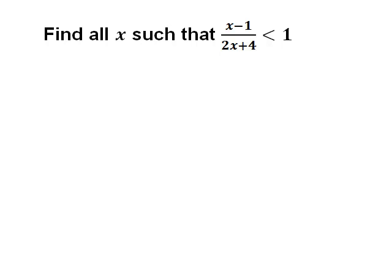Why shouldn't you simply multiply both sides by 2x plus 4? Well, in an inequality, if we multiply both sides by a positive number, the inequality stays the same. If we multiply both sides by a negative number, the inequality changes — so in our case, less than would become greater than. Before we can multiply, we need to know if what we're multiplying by is positive or negative.